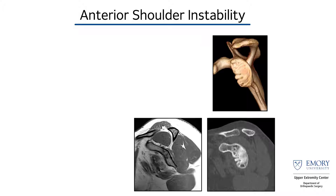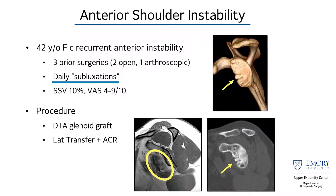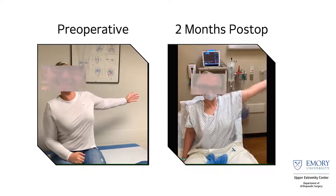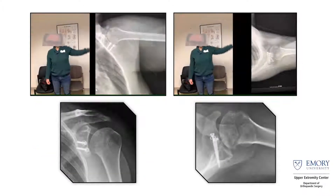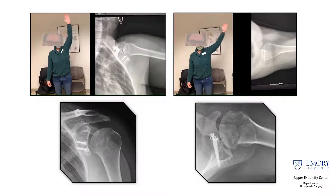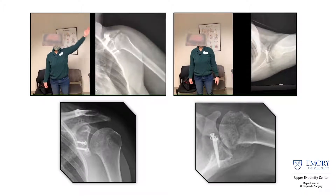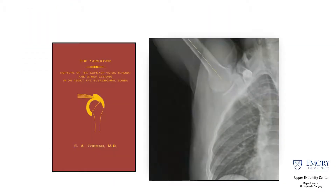Anterior shoulder instability offers another interesting case. This patient had recurrent anterior instability, three prior surgeries, daily subluxations, an irreparable subscapularis tear, and significant anterior glenoid bone loss. We performed a distal tibia allograft to reconstruct the bone loss and a latissimus dorsi transfer for anterior capsular reconstruction. Post-operatively she returned to work as a collegiate volleyball referee with very limited limitations. On DDR you can see she stays inside the joint and is centered over the distal tibia allograft — essentially we created a bigger surface area and platform for her to function on.